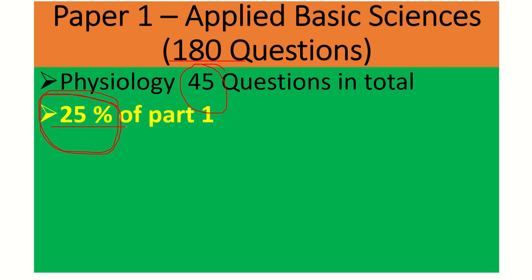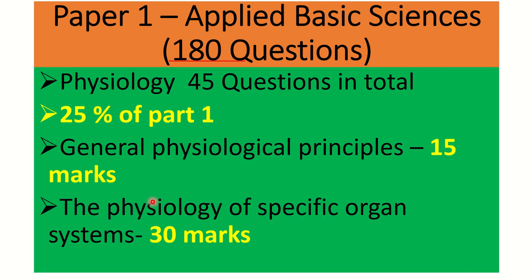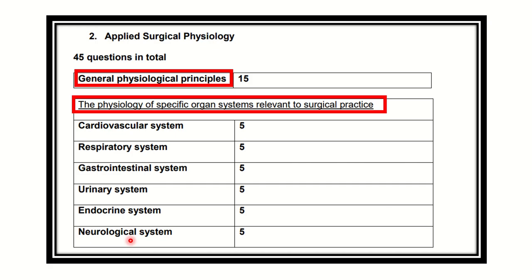We have to focus here very carefully. In General Physiology there are 15 marks, and in the physiology of specific organ systems there are 30 marks. So general physiology principles account for 15 marks, and the specific organ-related syllabus accounts for 30 marks.